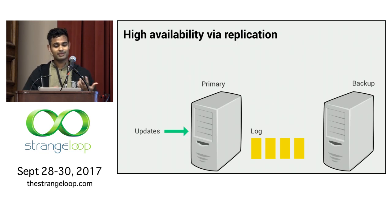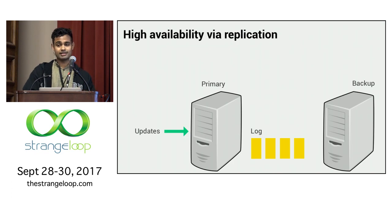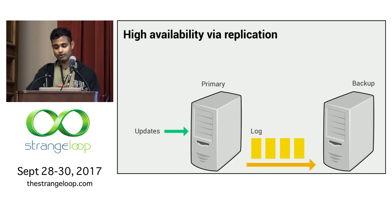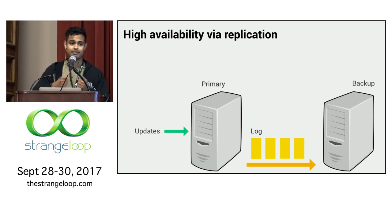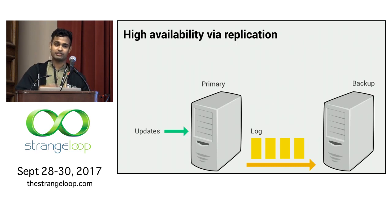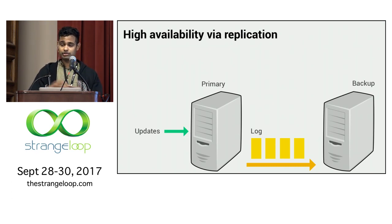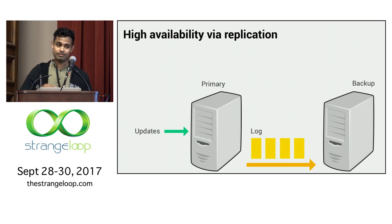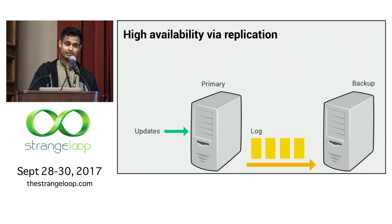Requests which update server state are typically executed against a primary. The primary logs these updates into a log, and this log is shipped out to a backup. The whole point of replication is that a backup should be an exact copy of the primary by playing back this shipped log. This is really important — if it's not an exact copy, the backup has no hope of servicing client requests if the primary goes down.